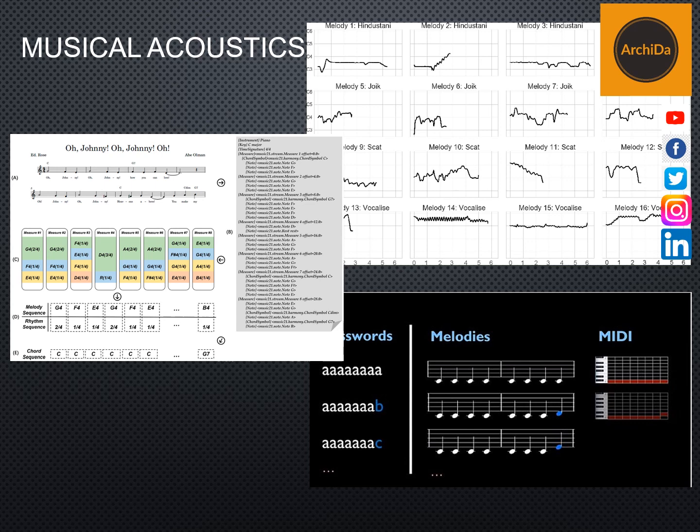Human music perception is investigated from two perspectives. The first is the computational model perspective, wherein it desires an algorithm that perceives the same things that humans do, regardless of how the program accomplishes this. And the second is the physiological model perspective, that desires an algorithm that models exactly how humans perceive what they perceive.